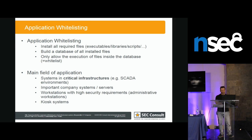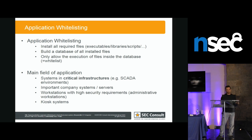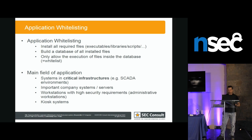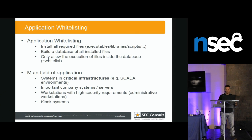Basically you set up a system — for example a web server — install all applications you need like a database server and web server. Then you install application whitelisting, which creates a database of all installed files: all executables, libraries, scripts, and so on — all put into the whitelist. After that, if you start an application it checks: is this in the whitelist? If yes, you can execute it. If not, you cannot. So if you go to a website and it drops malware, the malware will not execute because it's not in the whitelist. That's the main idea.